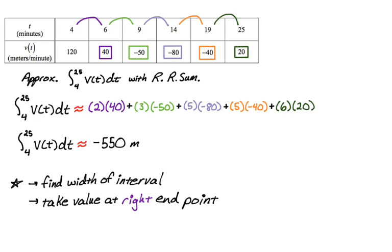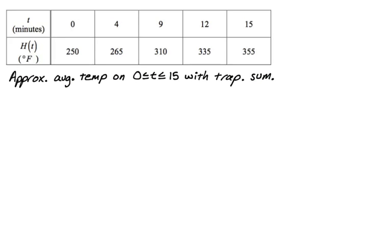The next thing we're going to look at is a trapezoidal sum — going through left, right, trapezoidal, and then midpoint. We want to approximate the average temperature on zero to 15 with a trapezoidal sum. The table gives temperature at t minutes in degrees Fahrenheit. The average value of h of t is the integral of h of t from zero to 15, divided by 15 minus zero — and that's what we're approximating.